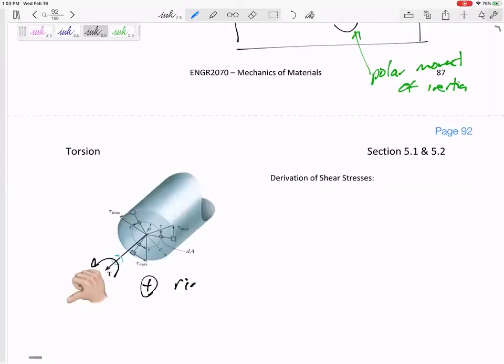Positive right-hand rule: if it is twisting and my thumb is pointing out of the cut, that would be a positive torque. If it's twisting and my thumb's pointing into the cut, that would be negative.